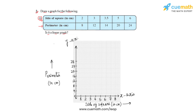If we plot these given points, we will get a line graph. This point represents this set, this point represents this set, this point represents this set, this point represents this set, and this point represents this set. This is how we are going to plot the different sides of squares with their respective perimeters.